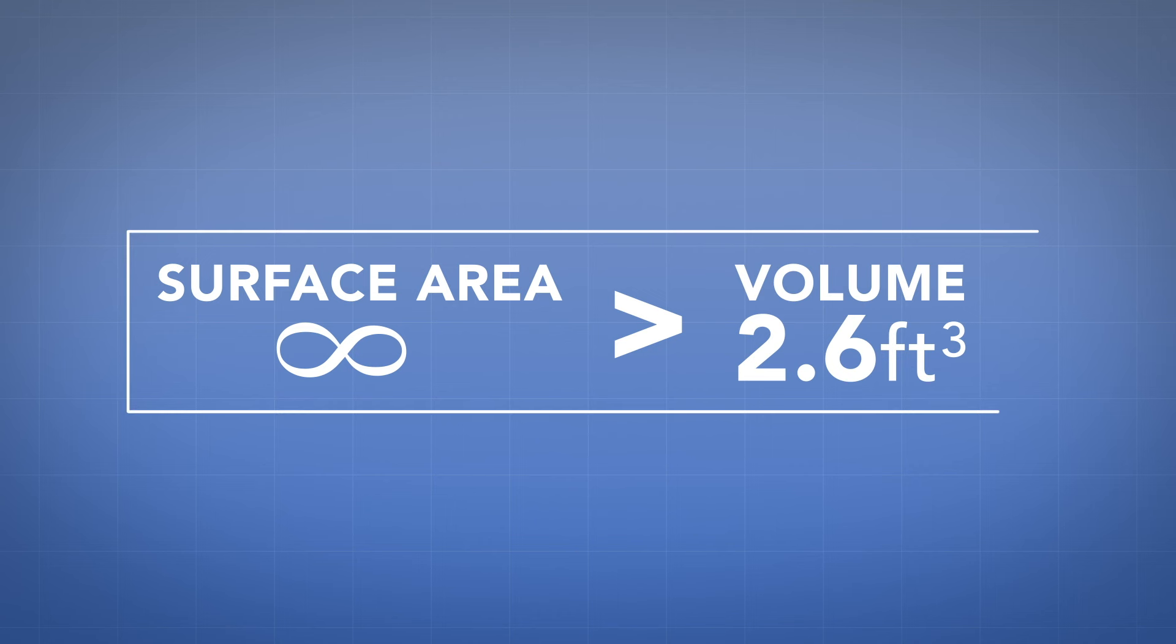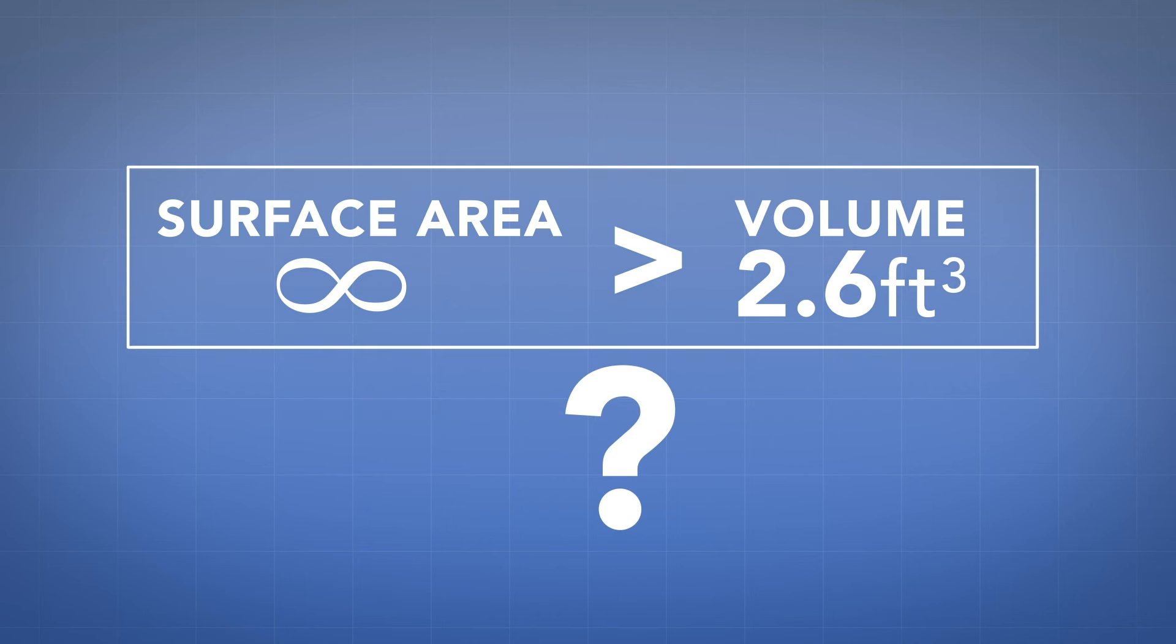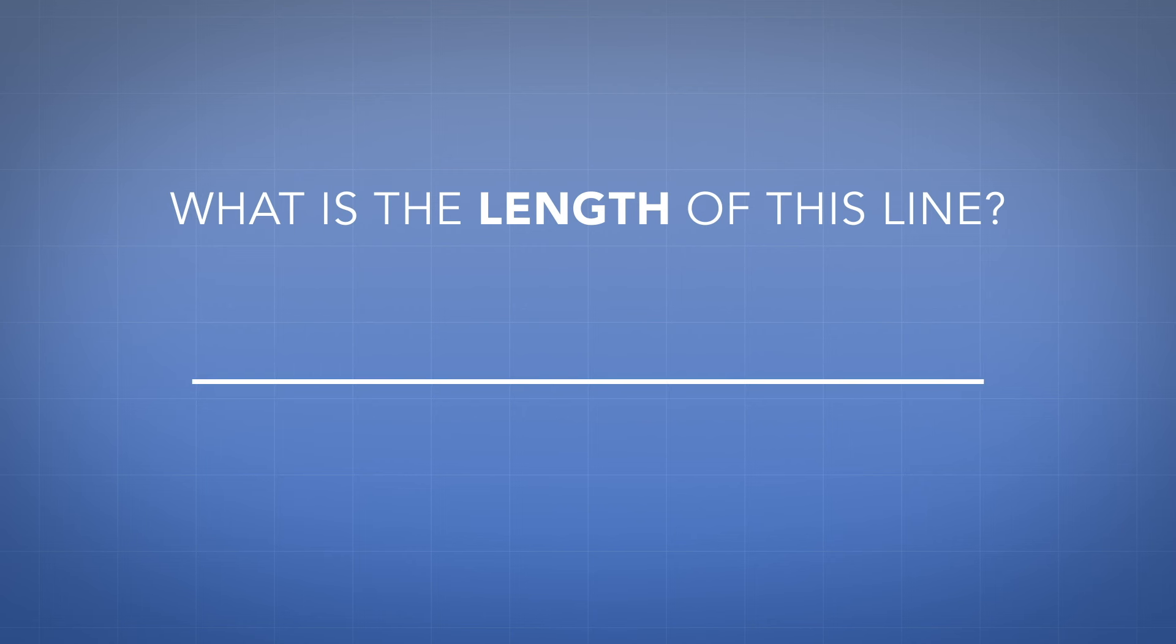Let's address the first point first. Why does the math tell us that their surface area is bigger than their volume? To understand, let me ask you a seemingly unrelated question. What is the length of this line? Try to describe it without referring to another length. Notice that saying something like, it's so-and-so centimeters long, is just describing it in terms of the length of a centimeter. Pause the video now if you'd like to try, and let me know your answer in the comments.